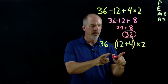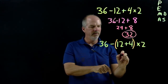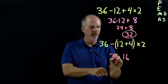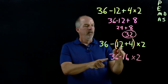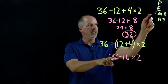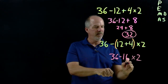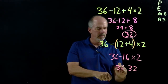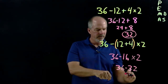Now this one we do have parentheses, so we're forced to do that first. So 12 plus 4 is 16. We'll bring everything else down. Now we have subtraction and we have multiplication. Multiplication comes first, so we'll do that: 16 times 2 is 32. And we have 36 and we subtract. So 36 minus 32 is 4.